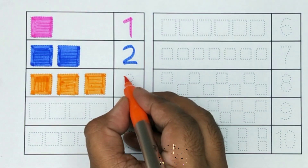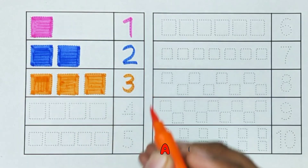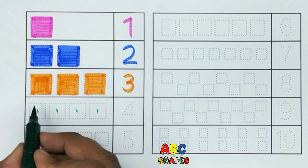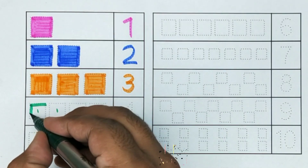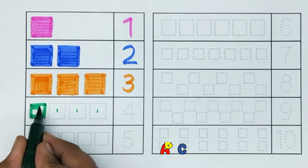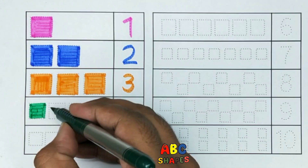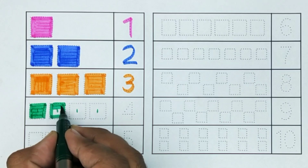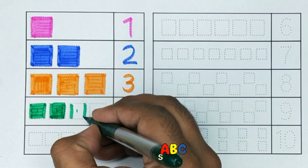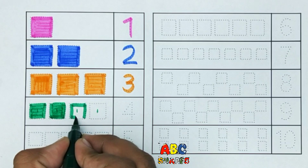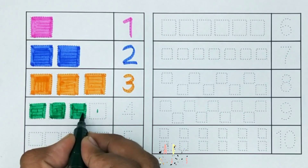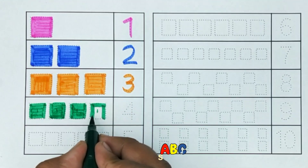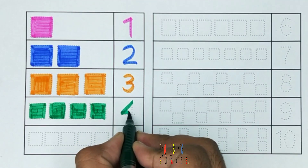3 squares. Now we have 1, 2, 3, 4 — 4 squares.